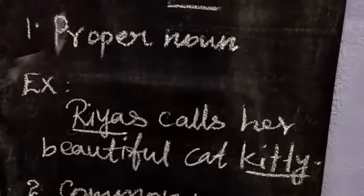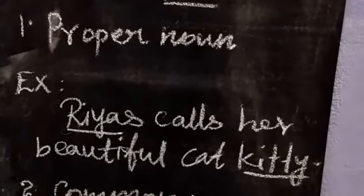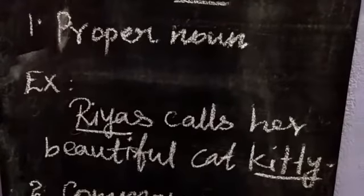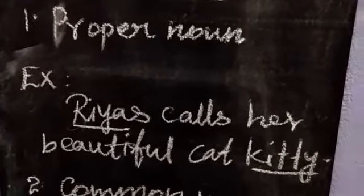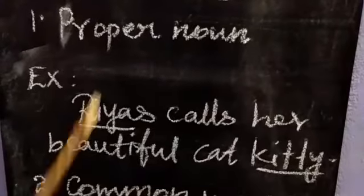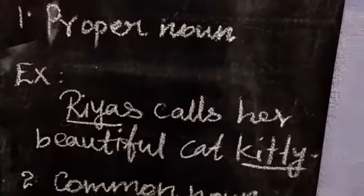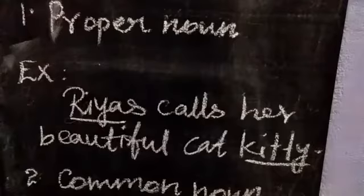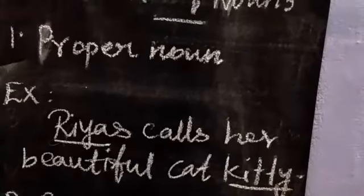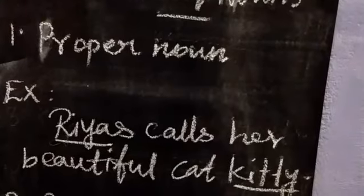Any special name of a particular person, place, animal, thing or event is a proper noun. For example: Divya, Raheem, Kolkata, book, paper — all these are proper nouns.